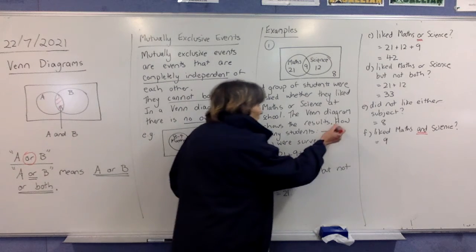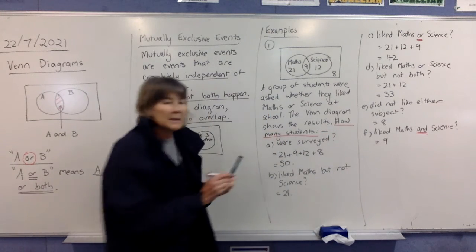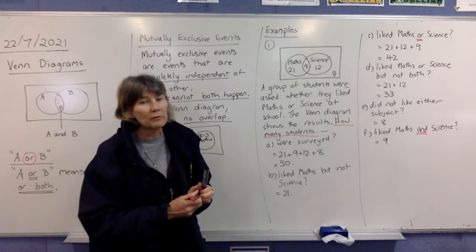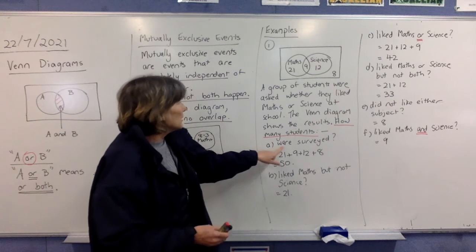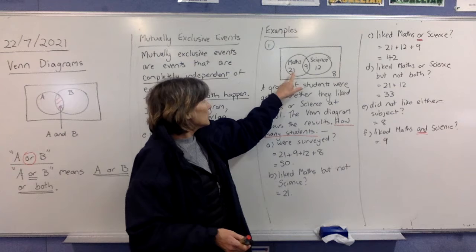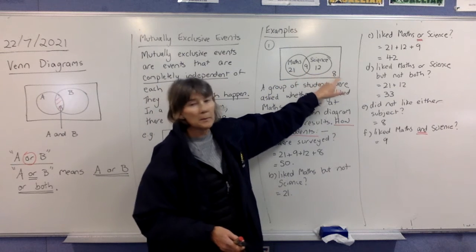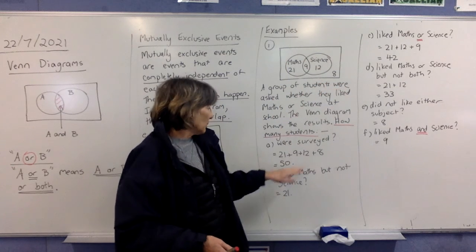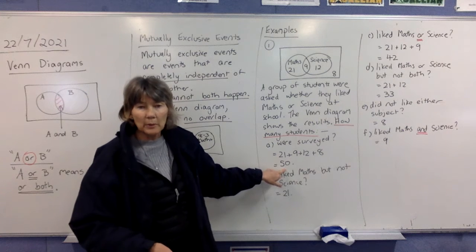Okay, now the questions are asking how many students? So we need to give a number for all of these. How many students were surveyed? Well, they've just got to add up all these numbers to include everybody. And we get 50 when we add them up. The next one says, how many students liked maths but not science? So they're in the maths circle, but they're not in the science circle. So it's just these 21 here.